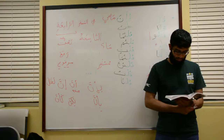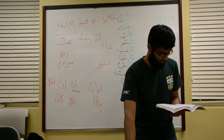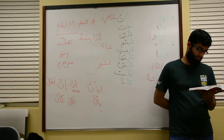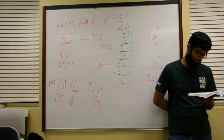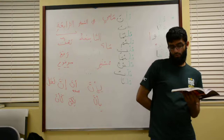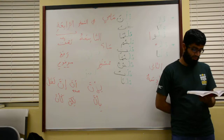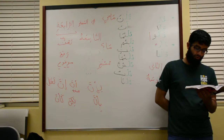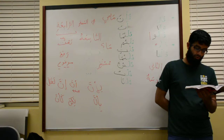Second example: Zahabah Ibrahimu ilal mustashfa li anna hu maridun — Ibrahim went to the hospital because he is sick. Note that li anna is made up of li, meaning for, and anna, which is a sister of inna, so the noun following it is mansub — it has a fatha.